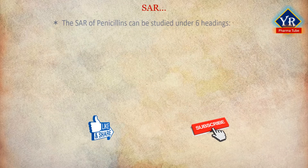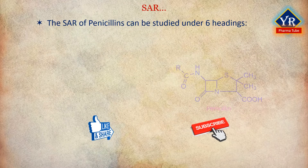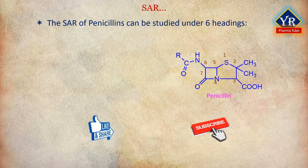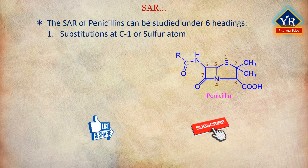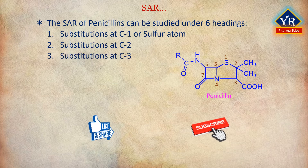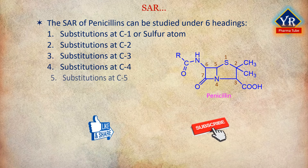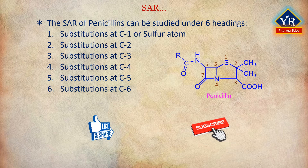The SAR of penicillins can be studied under 6 headings: Number 1, substitutions at C1 or sulfur atom; Number 2, substitutions at C2; Number 3, substitutions at C3; Number 4, substitutions at C4; Number 5, substitutions at C5; and Number 6, substitutions at C6.